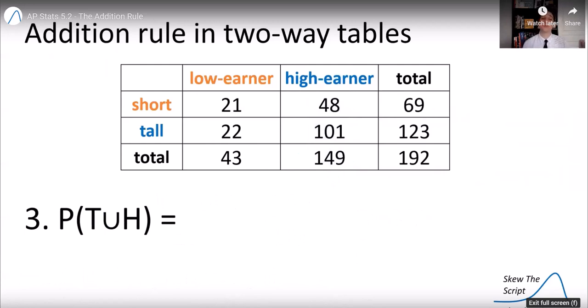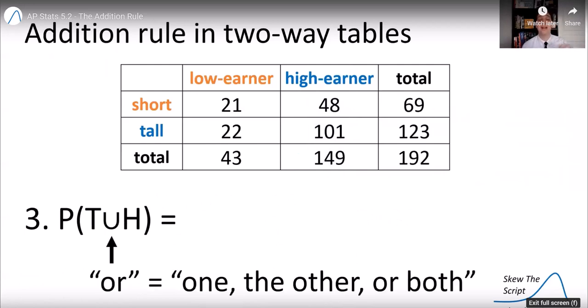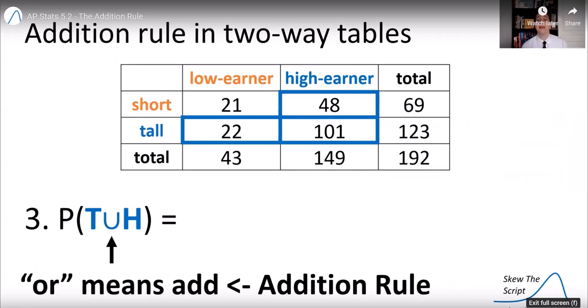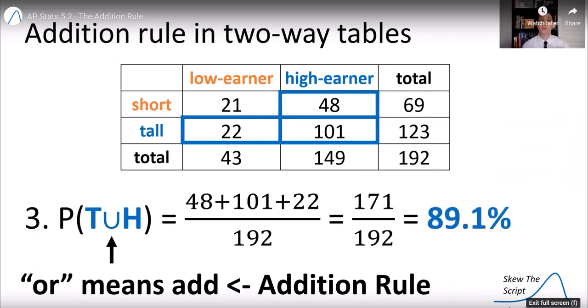So now let's find the probability of finding someone who's tall or a high-income earner. Remember, or means one, the other, or both. So that includes all these categories of people who are tall, a high-income earner, or both. And remember, or means add. So we're going to be adding these together to get the full probability, 89.1%.